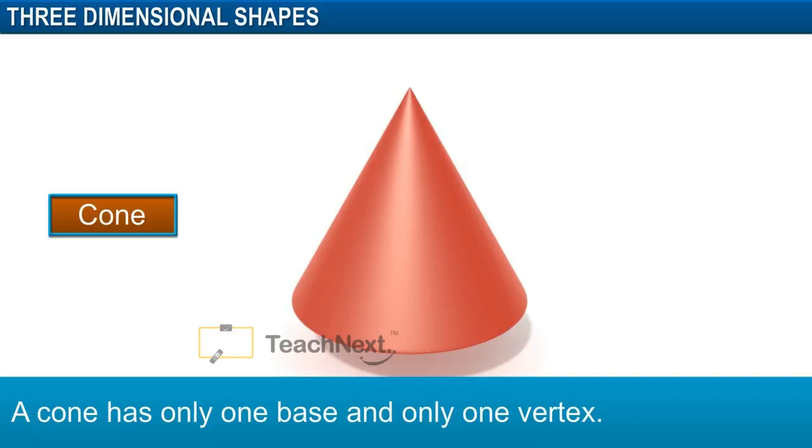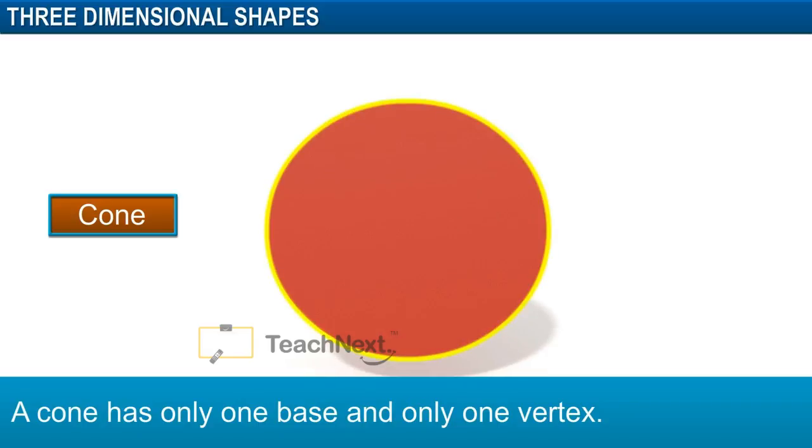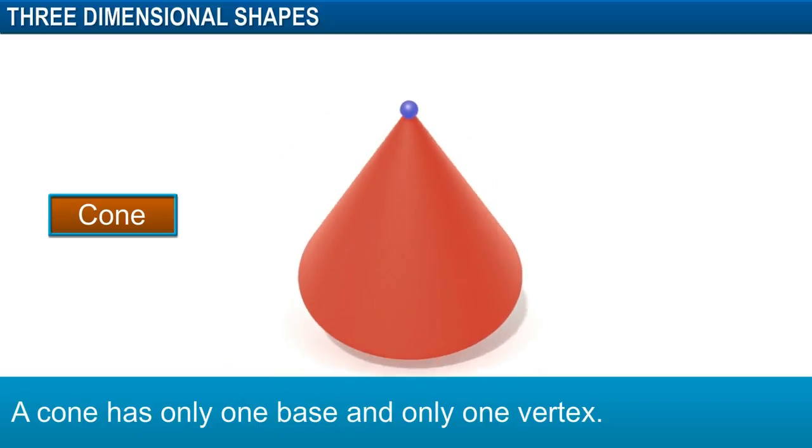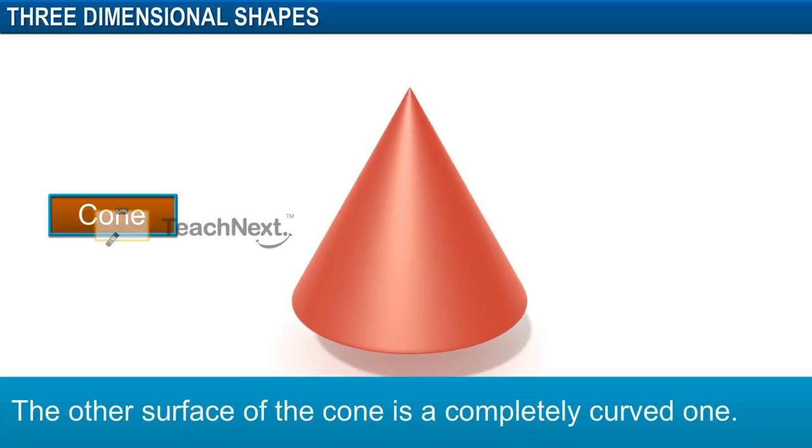Next, we will observe the cone. A cone has only one base and only one vertex. The other surface is a curved one.